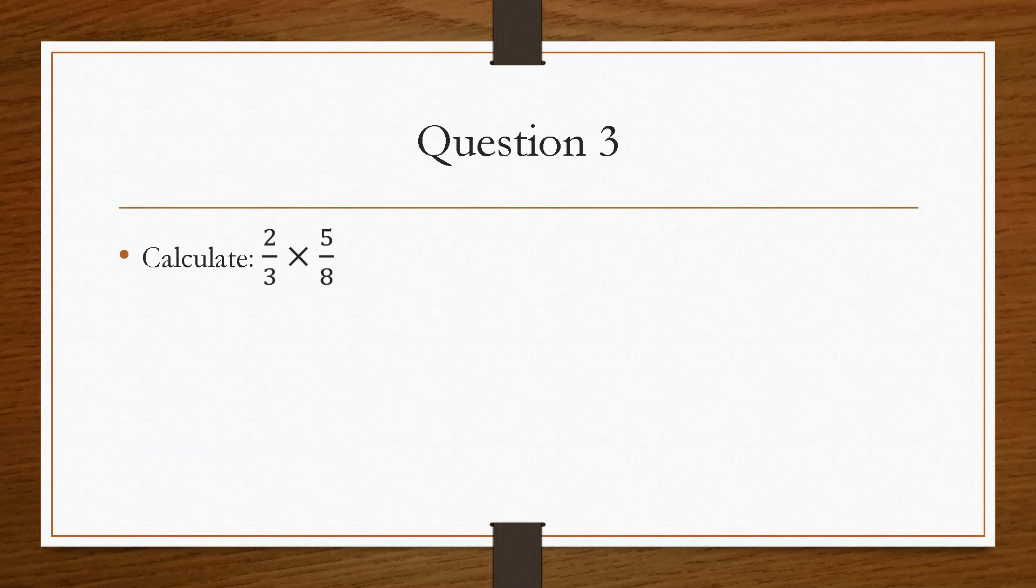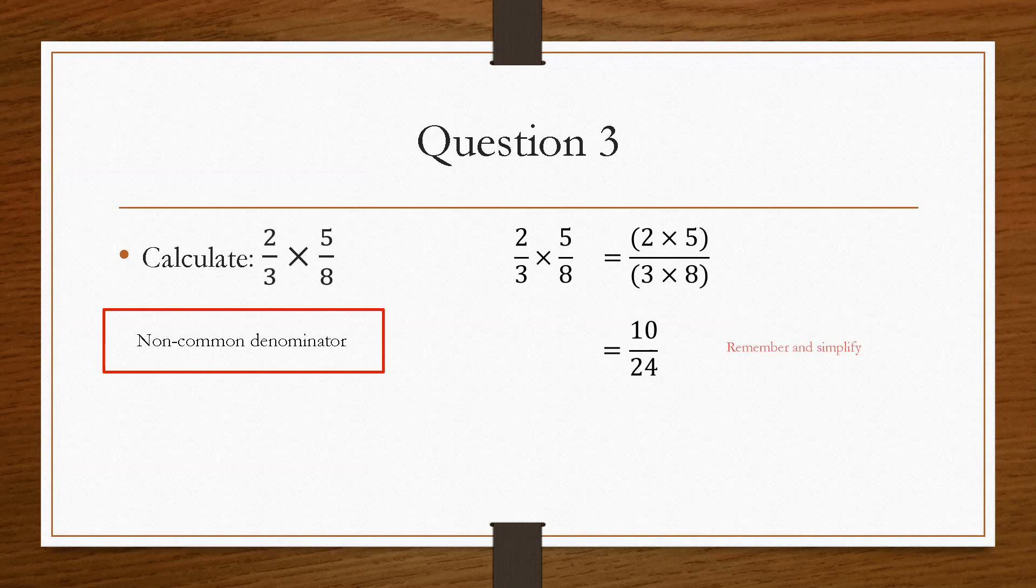Now, question number three is a lot easier in the sense that you don't have to use the Kiss and Smile method. Because this is one of the calculations that does not require a common denominator. So all you really have to do is times the two tops and times the two bottoms of the fraction. And that is it. So it'll become 2 times 5 over 3 times 8, which will give you 10 over 24.